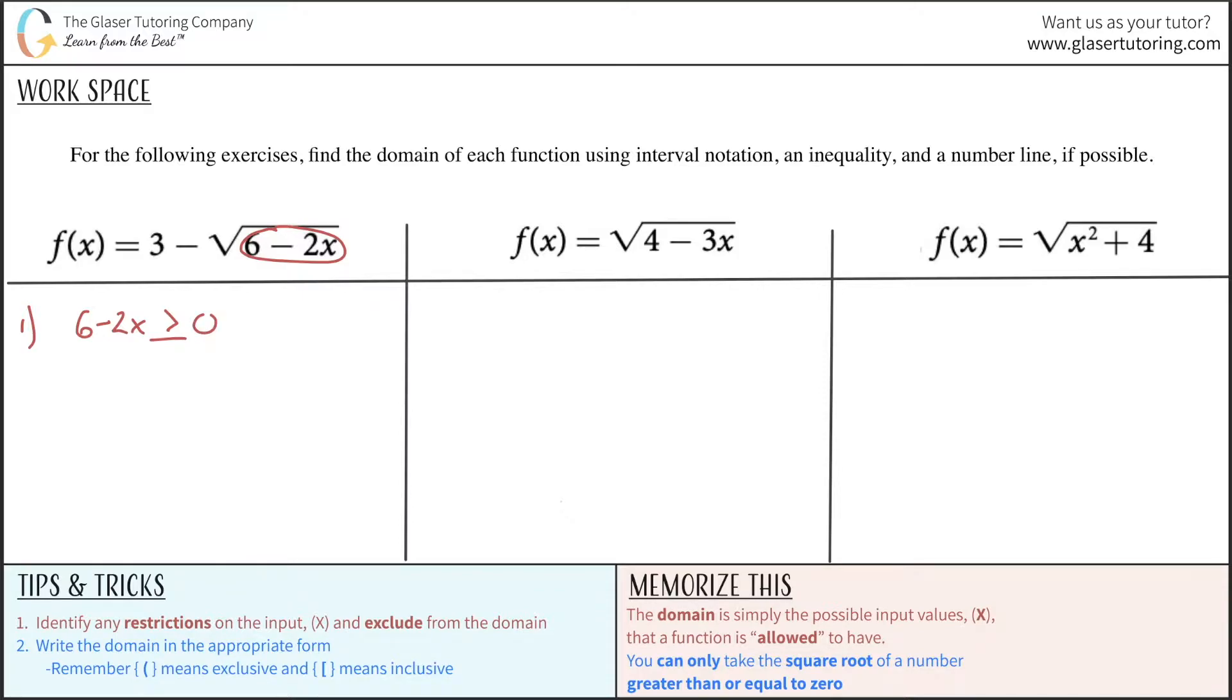So now to solve this, what we have to do is subtract the 6 on over to the right-hand side. When we do that, it becomes negative 2x greater than or equal to negative 6. And now we have to divide by negative 2.